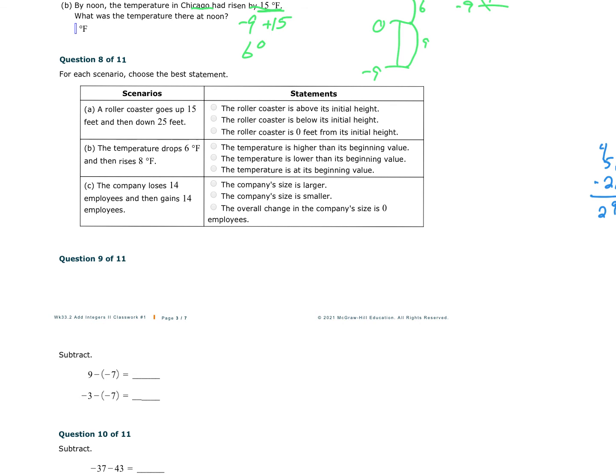So let's do this question now. For each scenario, choose the best statement. A roller coaster goes up 15 feet. So here's at 0. It goes up 15. And then it drops 25. So it goes past 0, which is minus 15, and then it keeps going down another 10. So 15 minus 25 is negative 10. It's going to be below where it started. The temperature dropped 6 degrees, then it rises 8 degrees. So wherever the temperature was, it went down 6, and then it went up 8. So where is it now? It's in the positives. It's higher than it began.